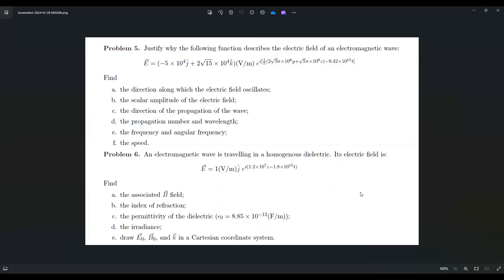Justify why the following function describes the electrical field of an electromagnetic wave. Find: A. The direction along which the electrical field oscillates. B. The scalar amplitude of the electrical field. C. The direction of the propagation of the wave. D. The propagation number and wavelength. E. The frequency and angular frequency. F. The speed.